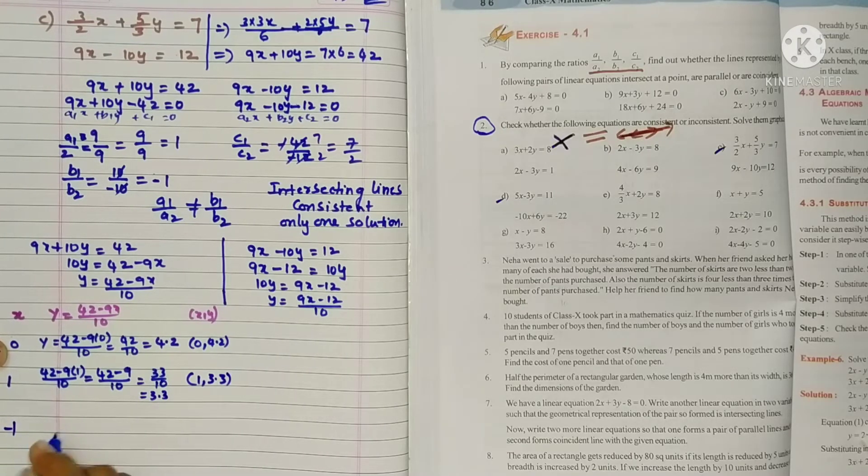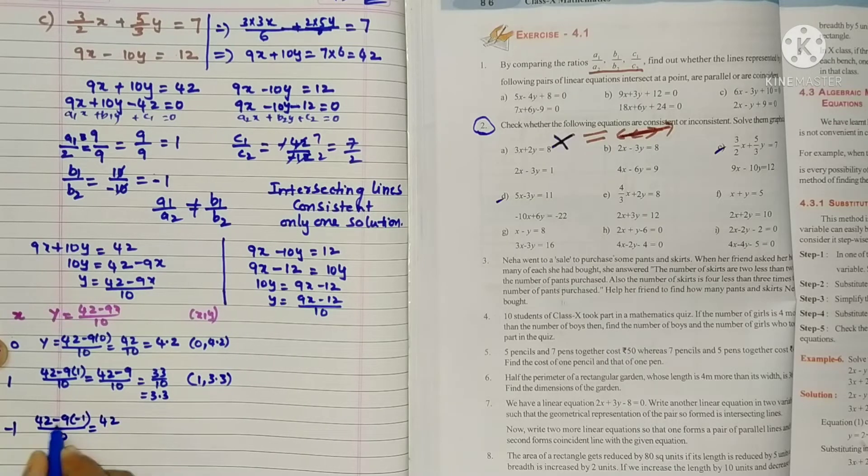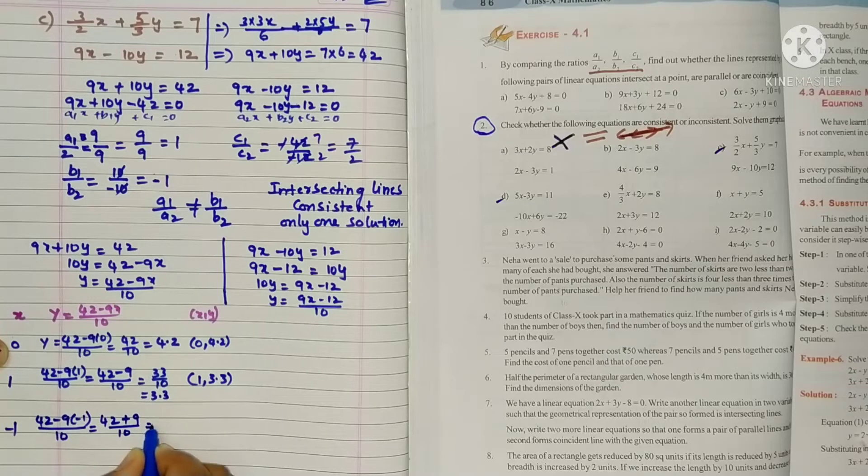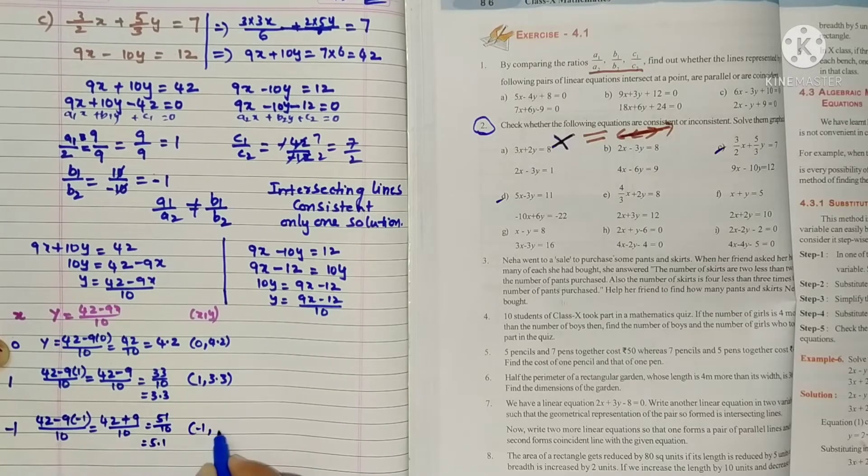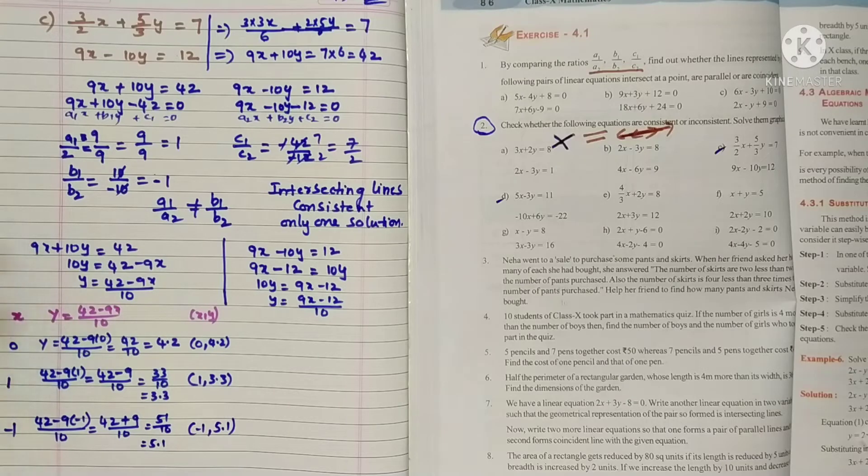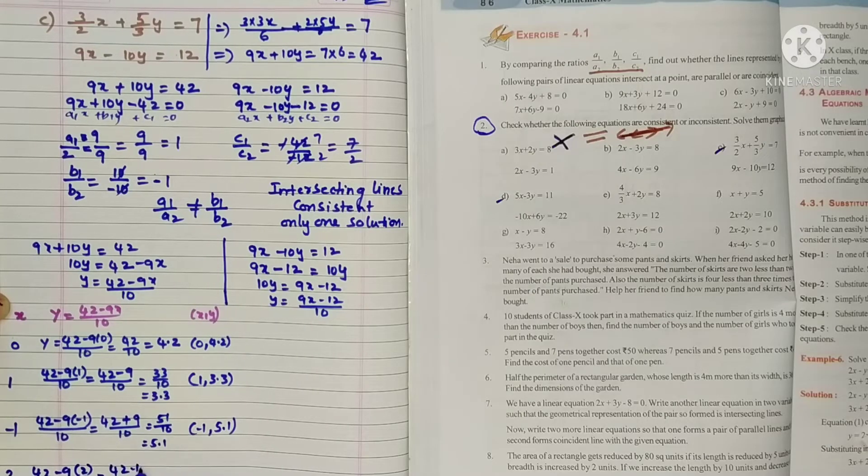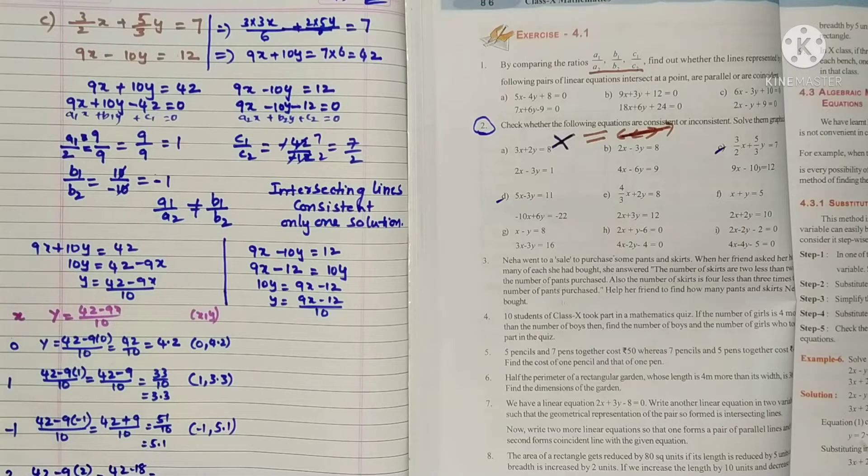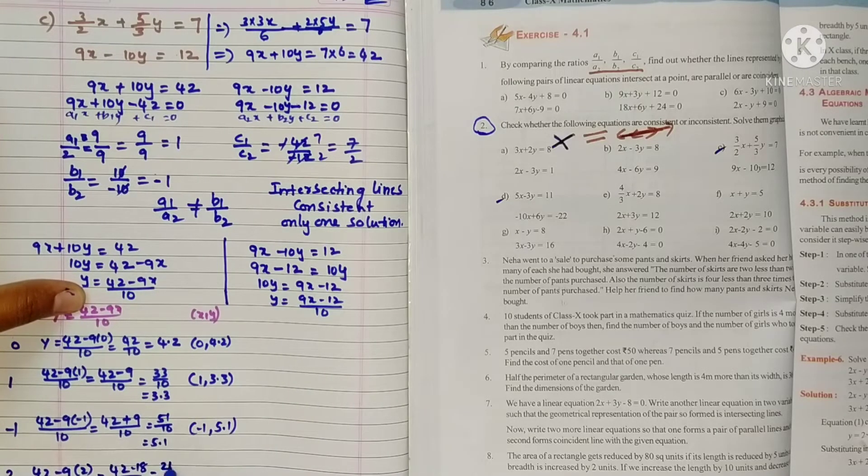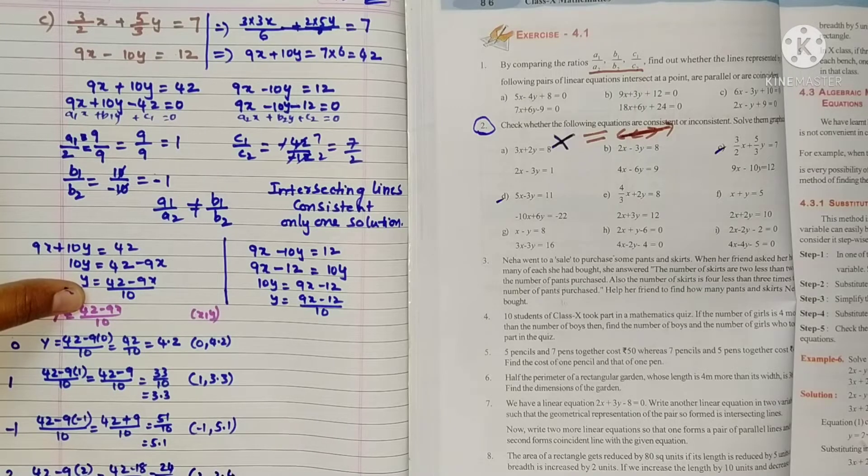Now we will take minus 1. We'll take small numbers. So 42 minus 9 into minus 1 by 10. That's 42 minus into minus is plus 9 by 10, so 51 by 10, that's 5.1. So x value minus 1, y value 5.1. Now we will take at minimum 4 values, so we will take plus 2. 42 minus 9 into 2 by 10, that's 42 minus 18 by 10, which is 24 by 10, so 2.4. x value 2, y value 2.4.